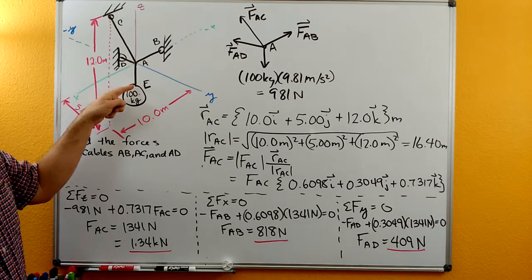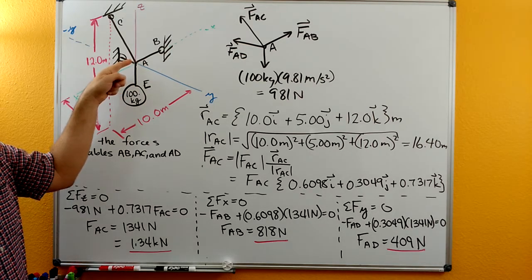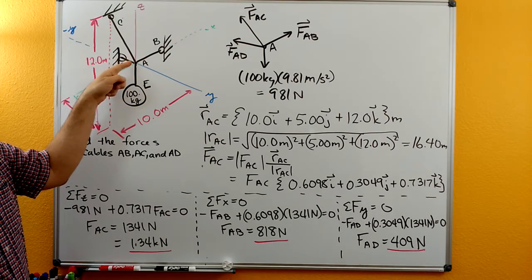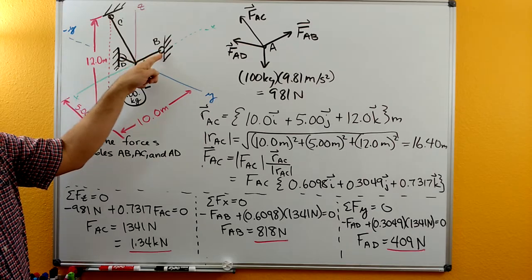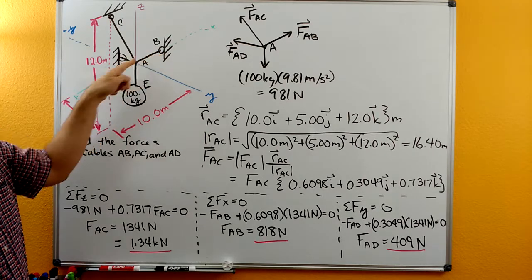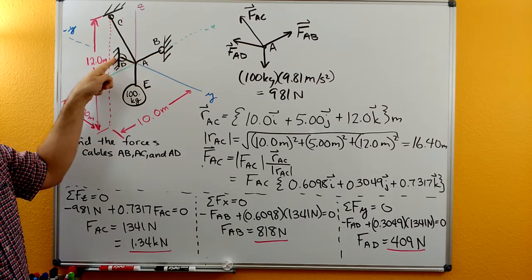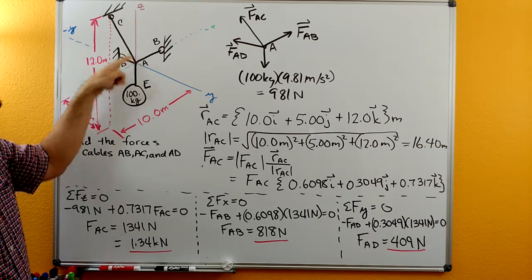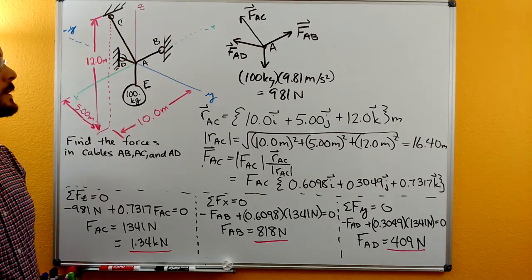So the mass is supported with cable EA. A is a knot and then we have from the knot out to a wall at B, then from the knot out to a wall at D, and then from the knot out to the ceiling at C.